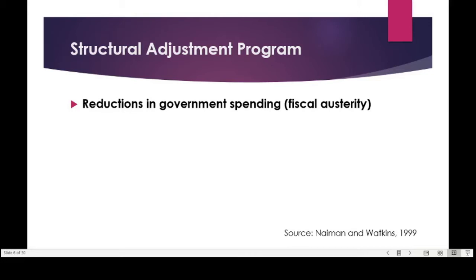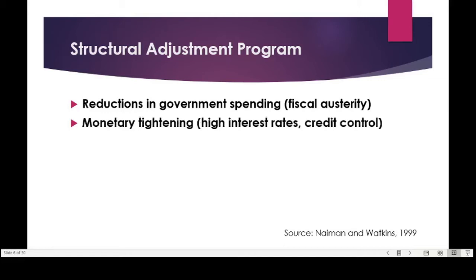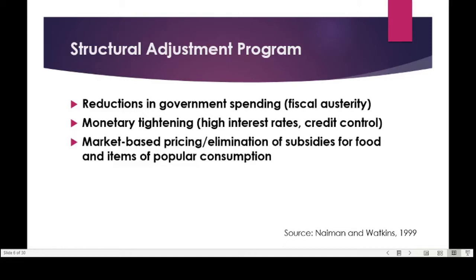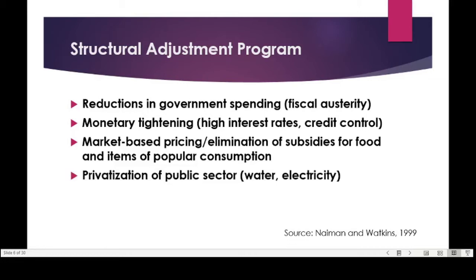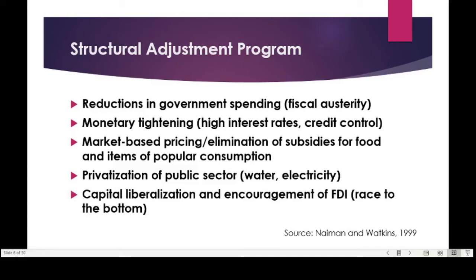Structural adjustment programs require countries to implement several measures: reduction in government spending (fiscal austerity), cutting public spending on education and health; monetary tightening by increasing interest rates and controlling credit; market-based pricing by eliminating subsidies on popular consumption items; privatization of public sectors such as water, electricity, utilities, medicine, and education; and capital liberalization — encouraging foreign direct investment by liberalizing rules to allow foreign capital to flow in and out freely.